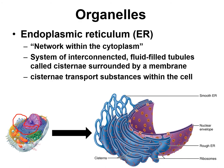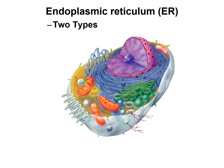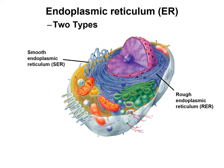The next organelles are the endoplasmic reticula. Endoplasmic reticulum literally means network within the cytoplasm. Just outside the nucleus, we find the rough and the smooth endoplasmic reticulum, which together consist of interconnected fluid-filled tubules called cisternae. Their functions are to transport substances within the cell — think of them as a fluid-filled subway system through the cell. The endoplasmic reticulum comes in two types: rough and smooth.